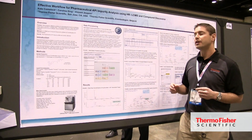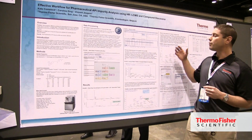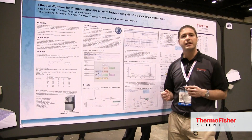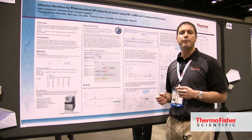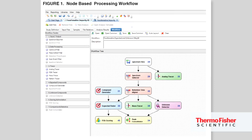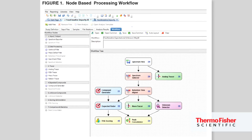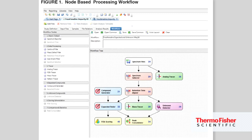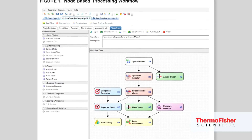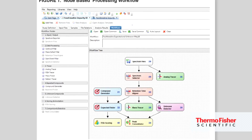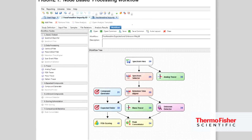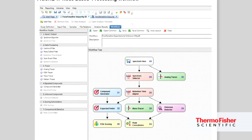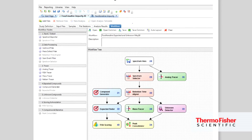Compound Discoverer has many powerful processing tools. For example, when combined with ultra-high-resolution data like from the Orbitrap Elite, the fine isotopic pattern of individual elements can be fully resolved and used to produce highly accurate elemental composition assignments.